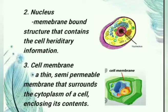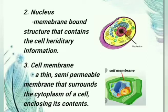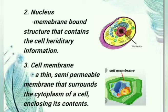Next is the cell membrane — a thin semi-permeable membrane that surrounds the cytoplasm of a cell, enclosing its contents. The cell membrane plays an important role in regulating the entry and exit of specific substances within the cell.